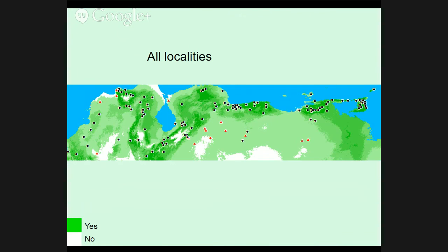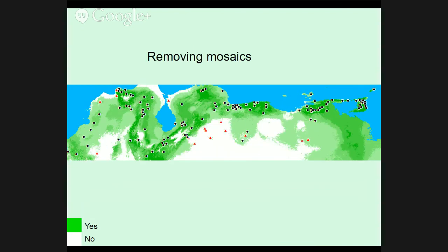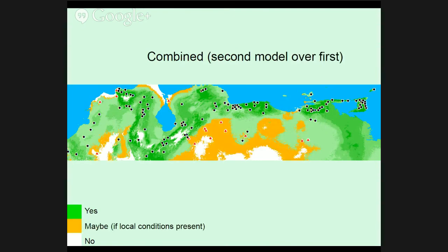This was the original model for the species with a minimum training presence threshold applied — white areas are below threshold and green indicates successively stronger predictions. After removing mosaics, the second model shows a very strong difference in extent. If doing a conservation assessment, the estimated distribution of the species would be very different. What Mariano is arguing — and I think it makes a lot of sense — is that our best understanding using correlative models is to combine the outputs of these two. The green areas are areas that, as long as there hasn't been deforestation, the species really has a very good environment. The orange areas are additional areas that could be suitable, but only if local conditions promote the presence of forest.